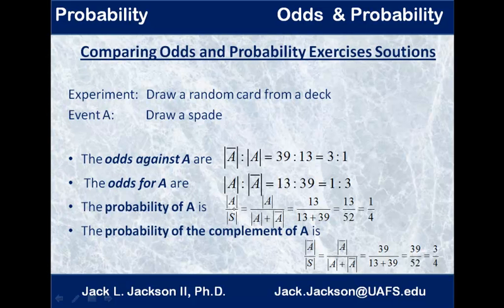The probability of A, then, is the size of A over the size of the sample space. Notice the size of the sample space is just the size of A plus the size of its complement. So once we've found the 13 and the 39, we can add those together to get the 52 total cards. And so that's 13 over 52, which again reduces to 1 fourth by dividing by 13.